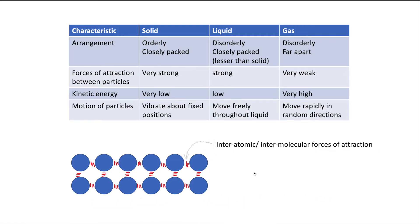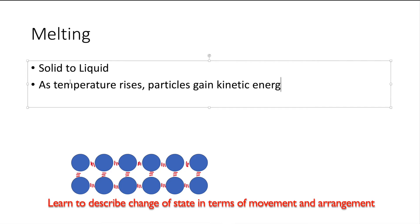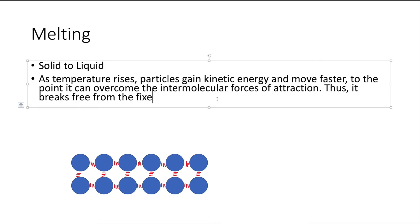For changing of states from one to another, the particles will undergo a certain series of events for that to happen. So for example, in melting, as temperature rises, heat energy is absorbed by the particles. The particles move faster. Once they receive sufficient energy, the vibrations are able to overcome the forces of attraction between them. Particles begin to break away from their fixed positions.